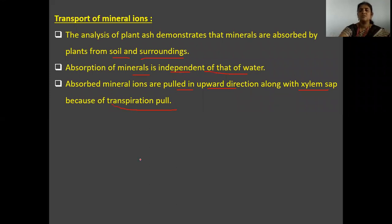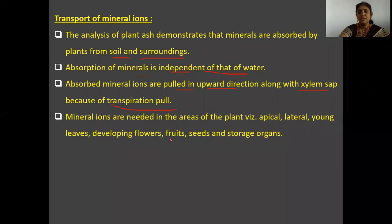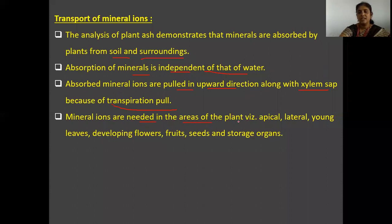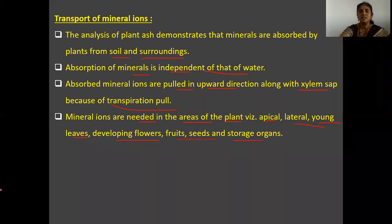The transpiration pull, which we saw in the previous lecture, is responsible for water translocation. Mineral ions are also transported towards the upper parts of the plant body along with the xylem sap due to the transpiration pull. These mineral ions are needed in the apical parts, lateral parts, young leaves, fruits, seeds, and storage organs for proper growth and development.